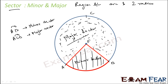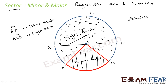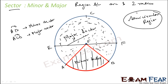What if the two points A and B are the endpoints of a diameter? In that case, you get two sectors that are equal to each other. We don't call these sectors minor or major — instead, each of these equal sectors is called a semi-circular region.